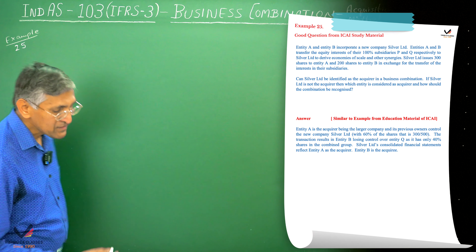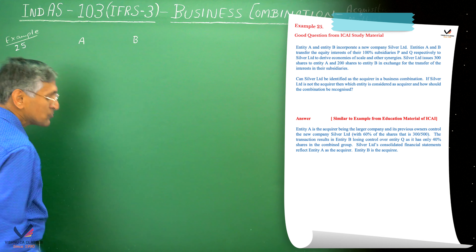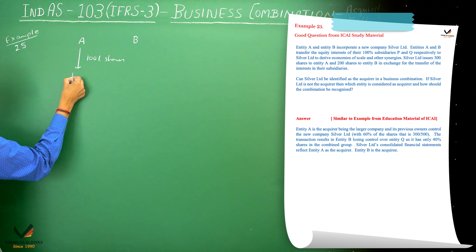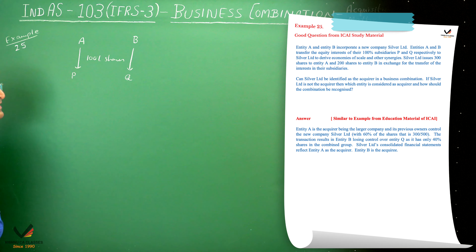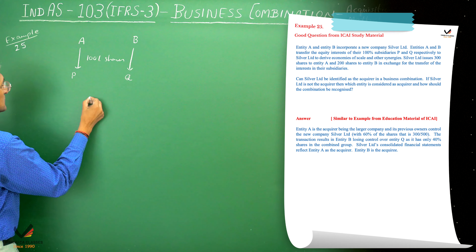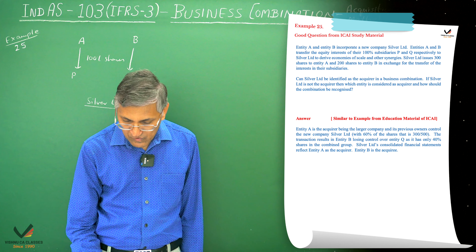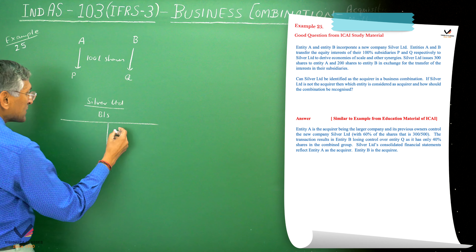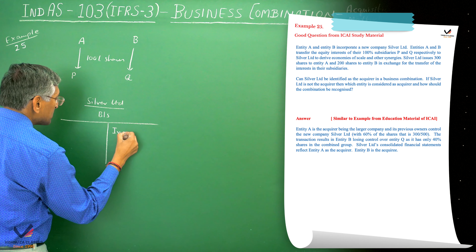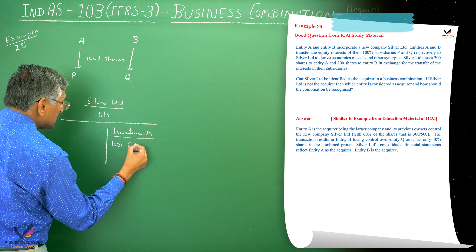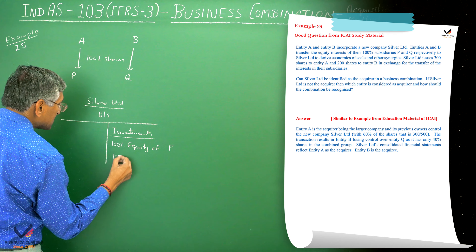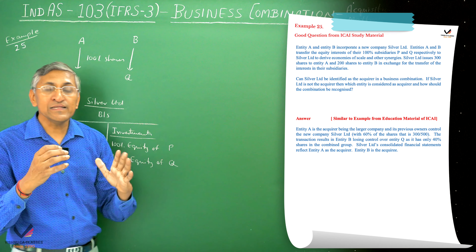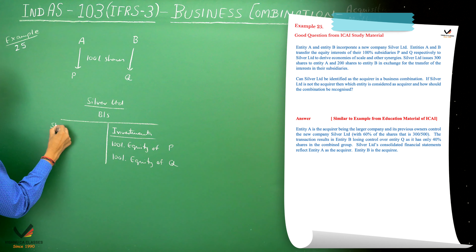Entity A has 100% shares of P company and Entity B has 100% shares of Q company. A and B have formed a new company, Silver Limited. Silver Limited will acquire 100% equity shares of P and Q, which will appear as investments. Shares are issued to A and B — Silver Limited issues 300 shares to Entity A and 200 shares to Entity B, making total shares of 500.